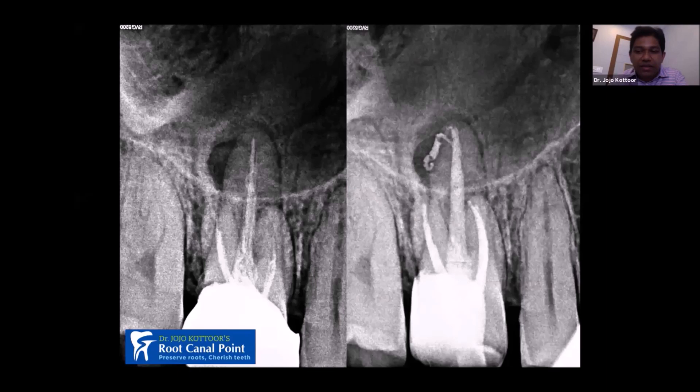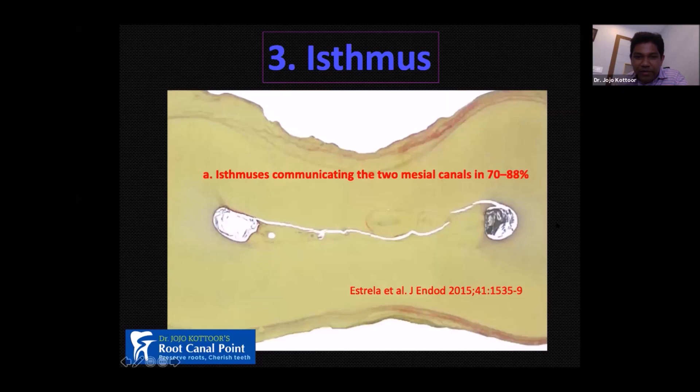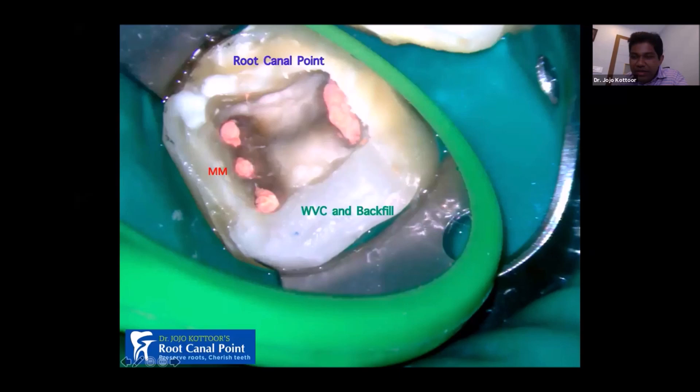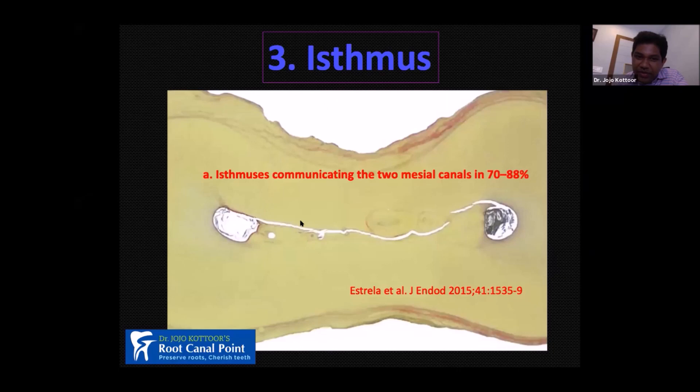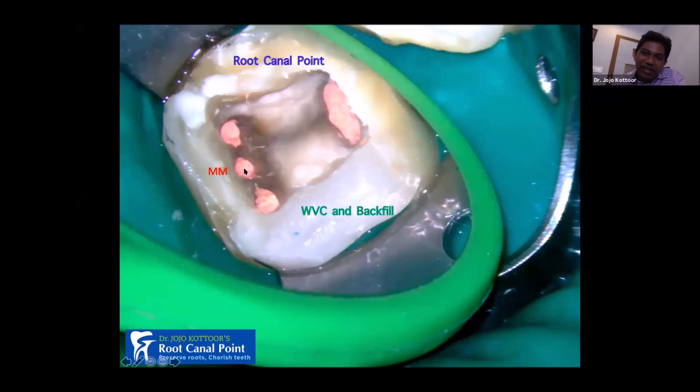The third complexity factor is the isthmus — the connection between two primary canals, most commonly seen on the mesial root of the mandibular first molar. When you put a file into this isthmus, you get what we call a middle mesial canal. As such, there isn't really a 'middle mesial canal' per se — very rarely you get a true one — but most of the time when you place a K-file through the isthmus and enlarge it with a rotary, you get a round canal that we call the middle mesial canal, which may join either mesial canal or have a separate exit.